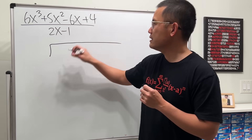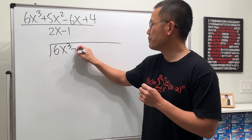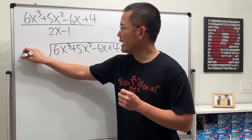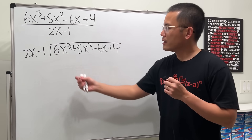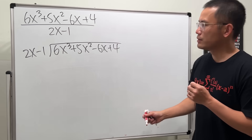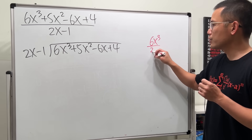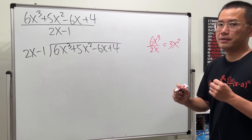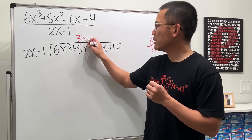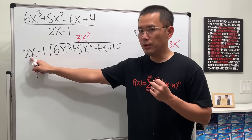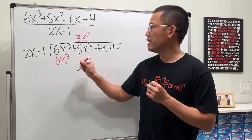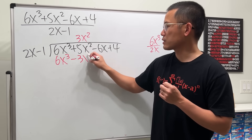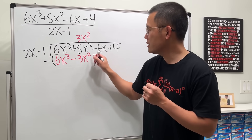For the second example, put the top on the inside: 6x³ + 5x² - 6x + 4, and the bottom 2x - 1 on the outside. Compare the first terms: 6x³ over 2x — 6 over 2 is 3, and x³ over x is x² — so we need 3x². Then 3x² times 2x is 6x³, and 3x² times negative 1 is minus 3x². Subtract with parentheses.